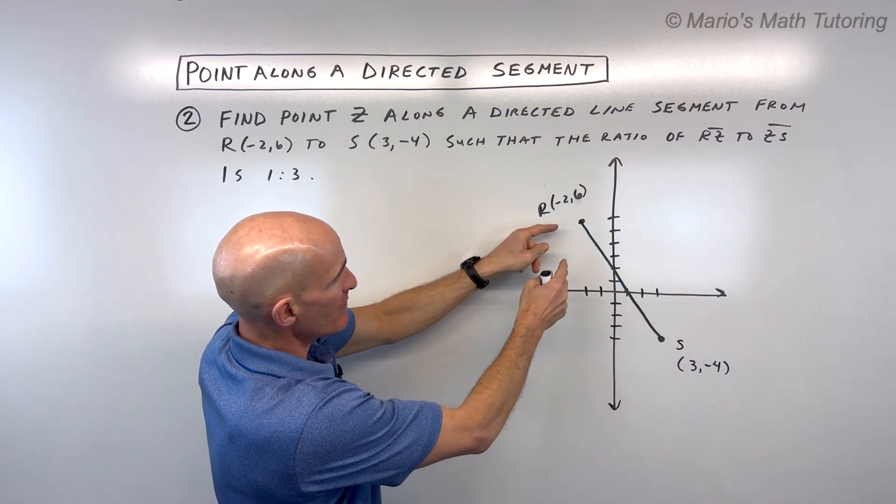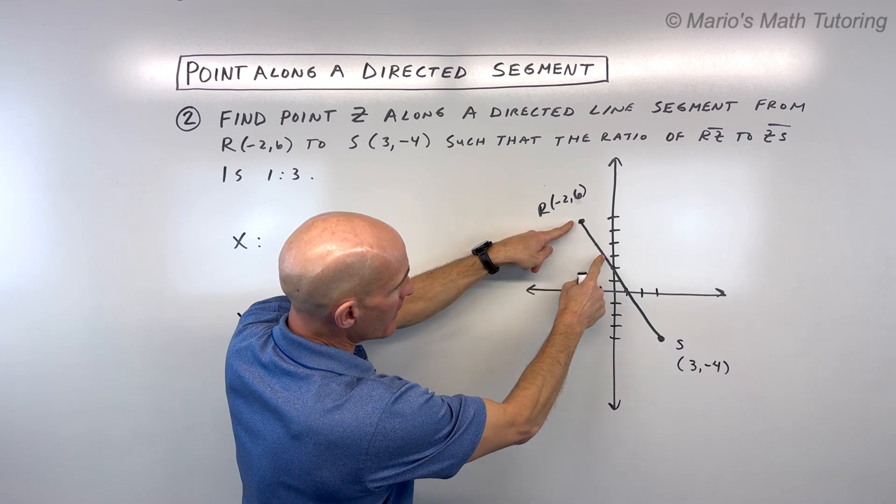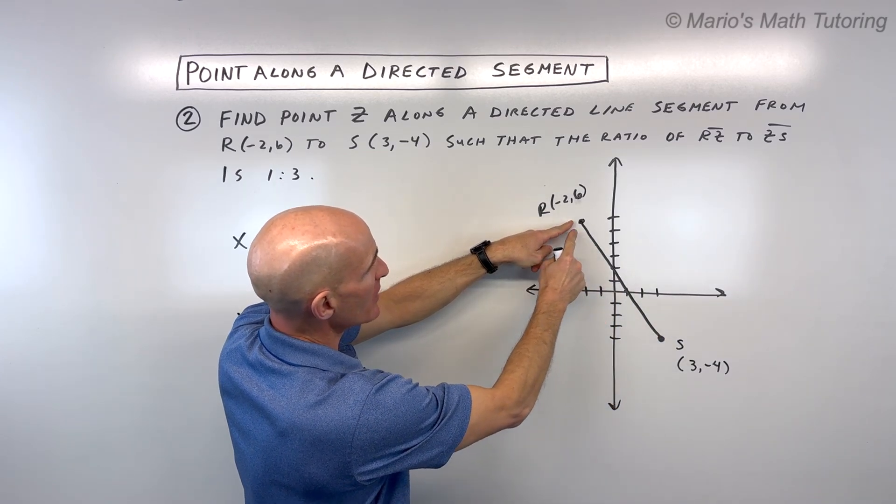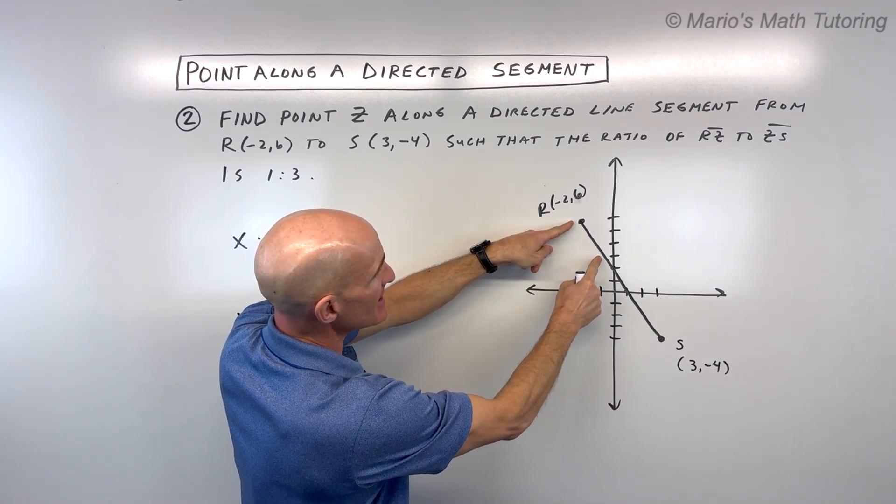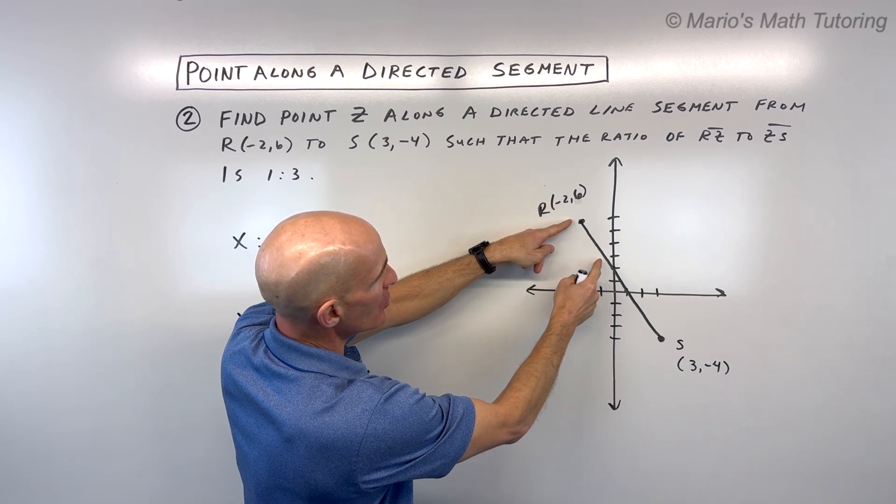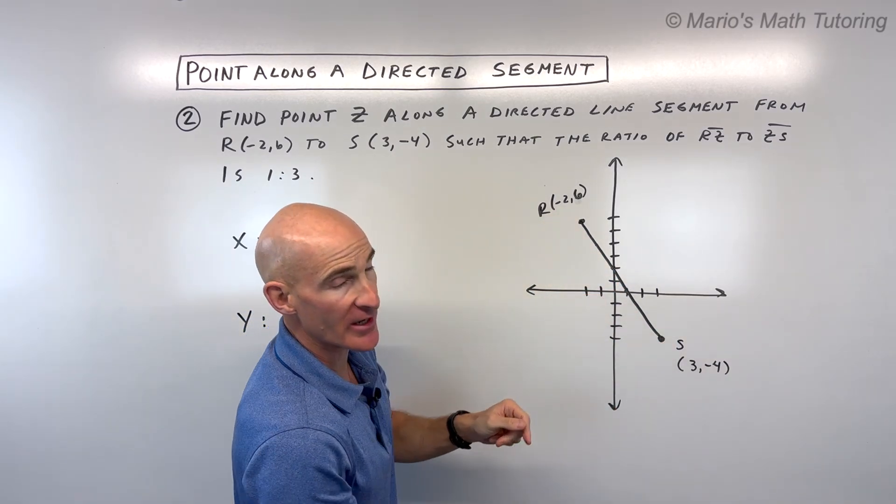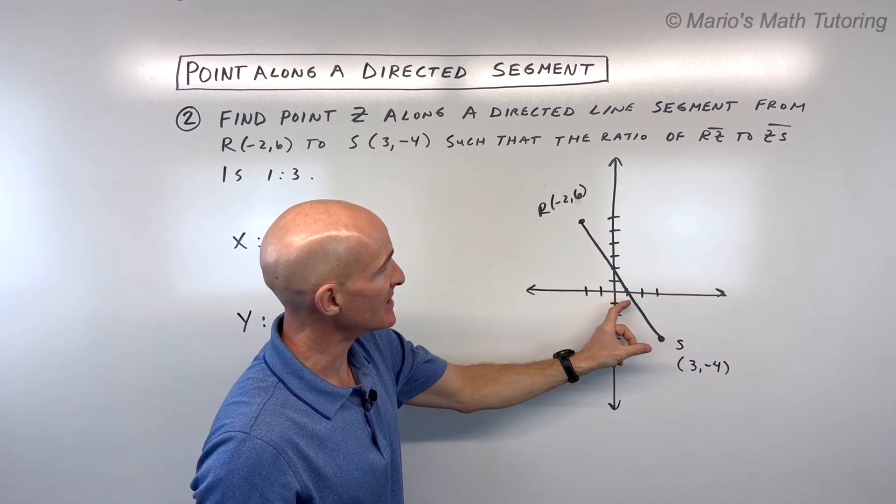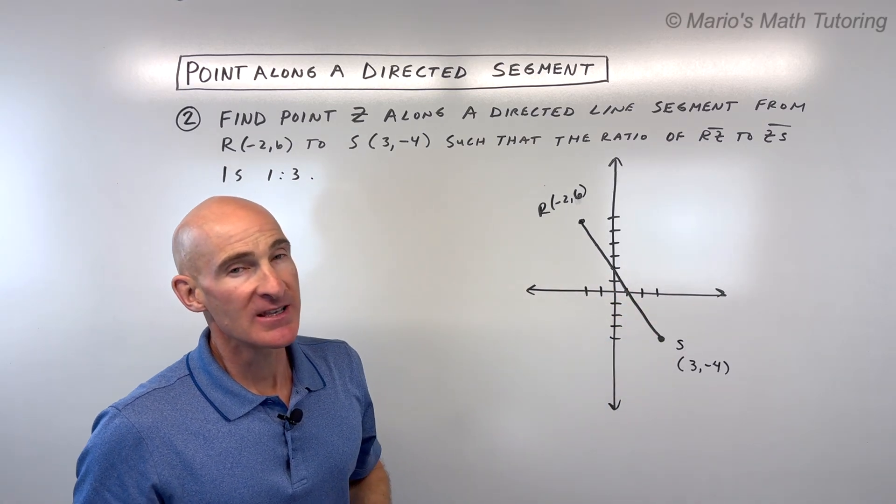So basically what we're doing is we're going from R towards S so that the ratio of R to a point Z is in the ratio of 1 to 3. So R to Z and Z to S is 1 to 3. See if you can do that problem.